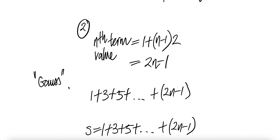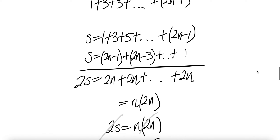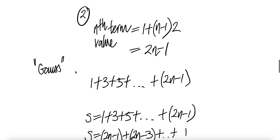Gauss, as a nine or ten year old boy, was given this problem by his teacher: please add one plus two plus three plus four all the way to 100. Before the teacher finished the question, he was able to produce the answer: the sum is 5050. He's quite a smart kid. Gauss also has many results under his belt — for example, the bell distribution, or the Gaussian distribution.